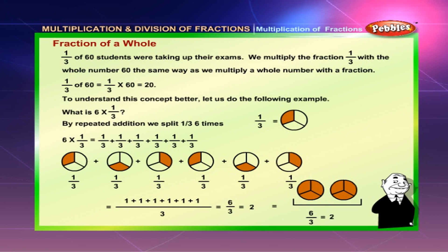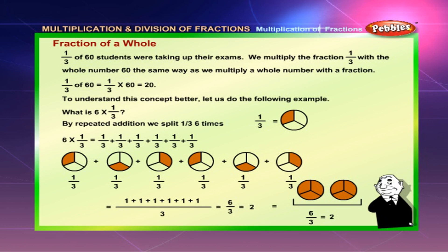Fraction of a whole: 1 by 3 of 60 students were taking up their exams. We multiply the fraction 1 by 3 with the whole number 60 the same way as we multiply a whole number with a fraction. 1 by 3 of 60 is equal to 1 by 3 into 60, which is equal to 40.